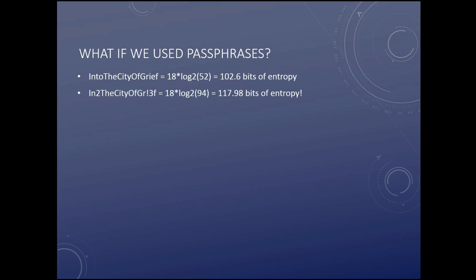The higher the entropy, the stronger the password and the harder it is to break with brute force and dictionary attacks. The longer the password, the harder it is for rainbow tables to break — most rainbow tables are only 8 to 12 characters long, so a 14-character password won't be broken by standard rainbow tables. An attacker would have to create bigger ones, and that takes considerable time.